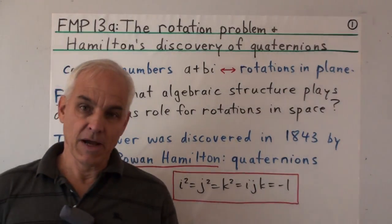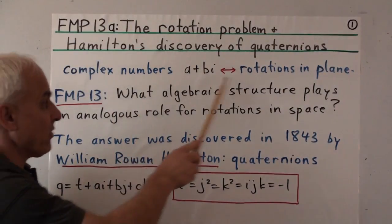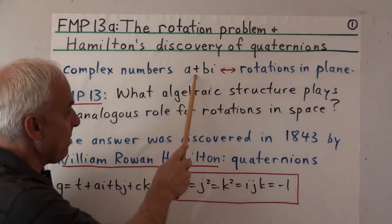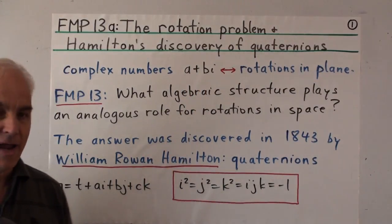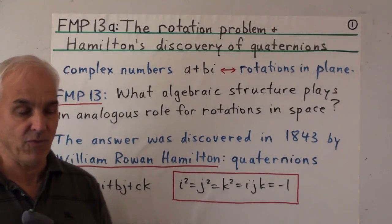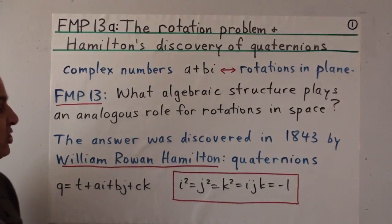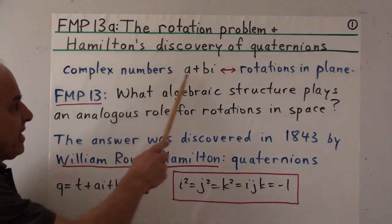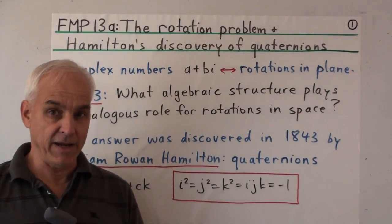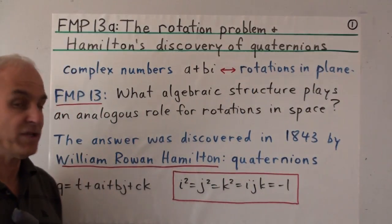The motivation for this problem comes from the intimate connection between complex numbers and rotations in the plane. Complex numbers are numbers of the form a plus bi, where i is a kind of imaginary number satisfying i squared equals minus one. Around Hamilton's time, it was well appreciated that complex numbers had an intimate connection with the geometry of the plane, and in particular allowed an efficient computational calculus for rotations.